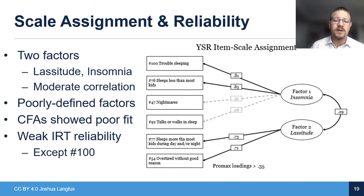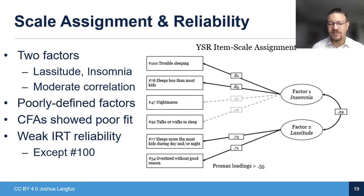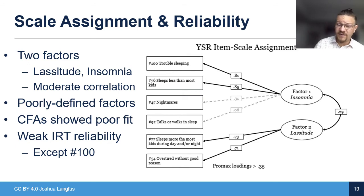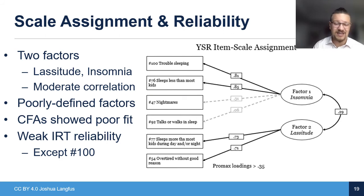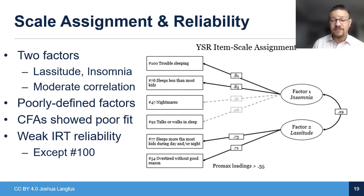In contrast, the Youth Self-Report also showed two factors, but they weren't very well defined. The items did break into lassitude versus insomnia symptoms, but several items did not load substantially on the factors. Two items that didn't load might relate to a potential third factor like parasomnias — nightmares, talking or walking in sleep — but there really aren't enough items to substantiate that factor. CFA showed extremely poor fit statistics, and item response theory analysis showed poor reliability, except for item 100, which was simply the prompt 'trouble sleeping.' It turns out that asking people that question can actually get some pretty good information.